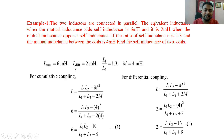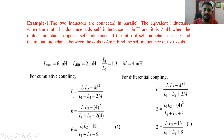The given data summary: the cumulative equivalent inductance is 6 milli Henry, the differential equivalent inductance is 2 milli Henry, the ratio of self inductance L1 to L2 is 1:3, and M is 4 milli Henry. As we know, for parallel-connected cumulative coils, the formula applies.